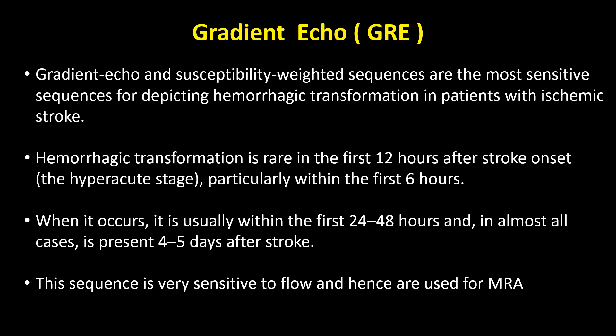Gradient echo or GRE and susceptibility-weighted image or SWI sequences are the most sensitive sequences for depicting hemorrhagic transformation in patients with ischemic stroke. Hemorrhagic transformation is rare in the first 12 hours after stroke onset, particularly within the first 6 hours. When it occurs, it is usually within the first 24 to 48 hours, and in almost all cases is present 4 to 5 days after a large stroke. This sequence is also very sensitive to flow and hence is used for MRA.